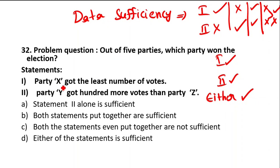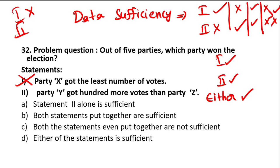Out of five parties, which party won the election? Checking with respect to first statement: party X got the least number of votes. You know which party is least, but what about the remaining four parties and which party won the election? That information is not there in statement one, so you can't answer the question with statement one. Let's go to statement two. When solving statement two, don't combine initially. Statement two says party Y got 100 more votes than party Z — it is only talking about Y and Z, not the remaining three parties. So second statement is also not giving you the answer.